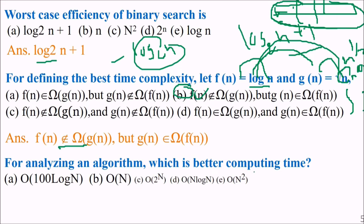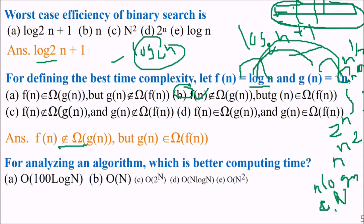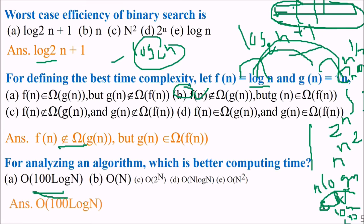For analyzing an algorithm, which is the better computing time out of: 100 log n, n, 2 to the power n, n log n, and n squared? The exponential is the worst, then n squared, then n log n, then n, then any constant times n, then log n, then constant time order of 1. So 100 log n belongs to the category of constant times log n — it is option a, which is the best among the choices.